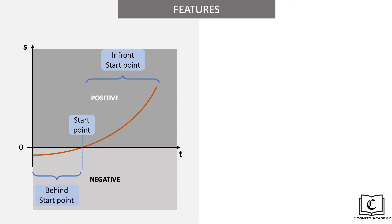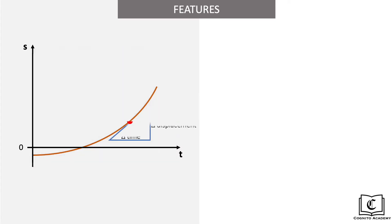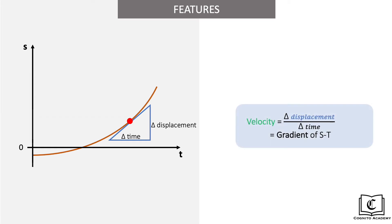Next, the gradient of the displacement time graph refers to the velocity of the object, since velocity is given by the change in displacement over the change in time.